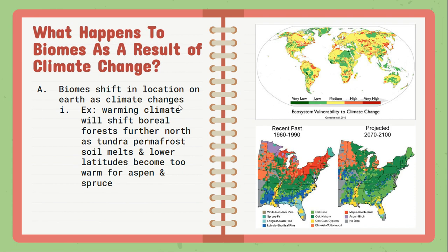Depending upon what type of resource comes from a biome — for example, forest-type biomes provide paper products, lumber, and timber, while other biomes are used for agricultural purposes — we can start to see almost a shift among those biomes as a result of climate change. Warming climates will actually shift our taiga or boreal forest further north. The tundra, where we find permafrost, will continue to melt over time. Lower latitudes will become too warm for those types of trees, so forest ecosystems will be incredibly impacted by climate change. The taiga and tundra are going to be impacted at a much greater rate than any other biome on earth.